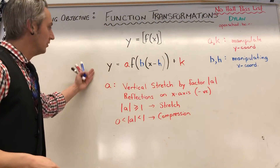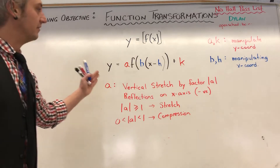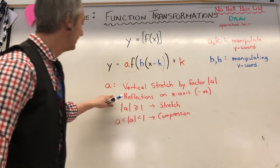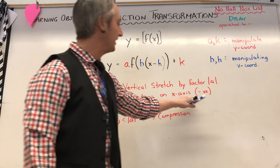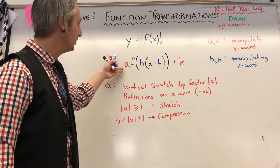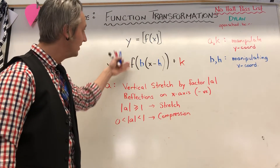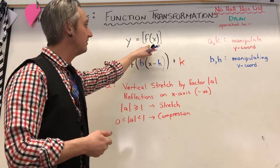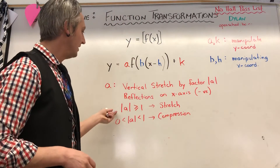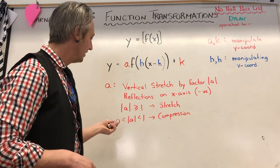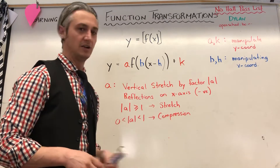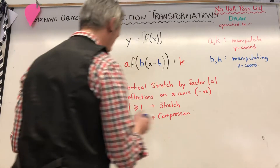So the first transformation we're looking at is 'a'. We know it's a vertical stretch by a factor of a. We have reflections on the x-axis when a is negative — so if I have y = −f(x), I'm just taking f of x and flipping it. When a is greater than or equal to 1, I get a stretch. When a is a fraction, I get a compression. So, what does that look like?